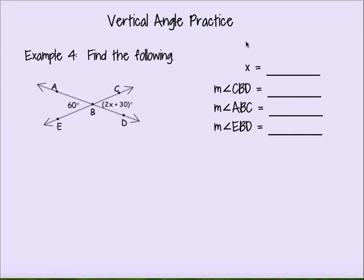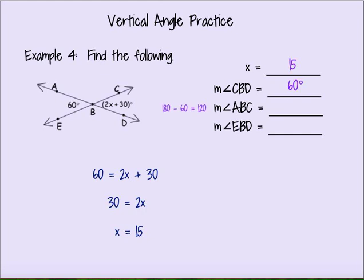Let's do one more vertical angle practice. We have a set of vertical angles in the picture. We know that they are congruent to one another, so I can set them equal to each other and solve for X, and I get X equals 15. It asks me to find the measure of angle CBD — since its vertical angle is 60 degrees, so is the measure of angle CBD. The measure of angle ABC forms a linear pair with our 60 degree angle, so subtracting 60 from 180, I'm left with a 120 degree angle. And EBD has to also be 120 degrees.